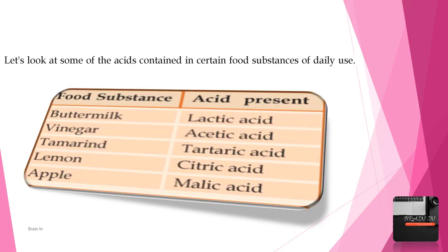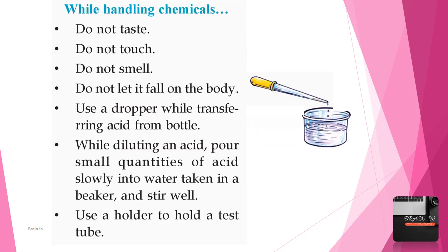Let's look at some of the acids contained in certain food substances of daily use. Buttermilk contains lactic acid, vinegar contains acetic acid, tamarind contains tartaric acid, lemon contains citric acid, and apple contains malic acid.